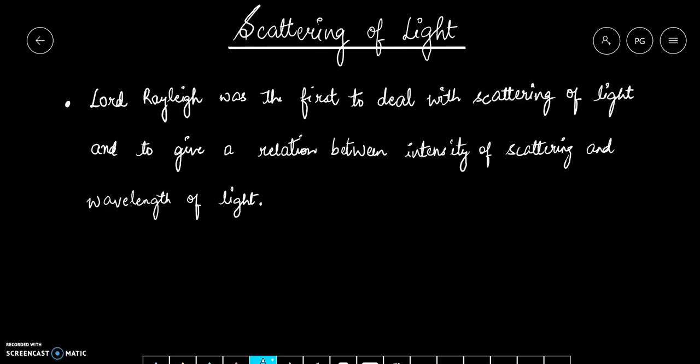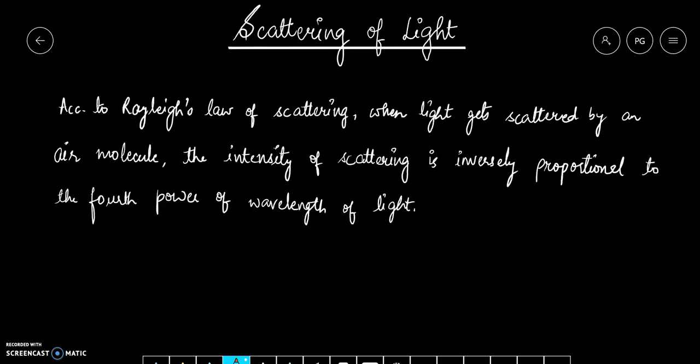Lord Rayleigh was the first to deal with scattering of light and to give a relation between intensity of scattering and wavelength of light. Rayleigh's law of scattering: When light gets scattered by air molecules, the intensity of scattering is inversely proportional to the fourth power of the wavelength of light. Rayleigh has said that if lambda is a wavelength of light, the scattering will be inversely proportional to the fourth power of its wavelength.